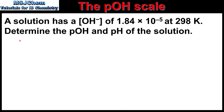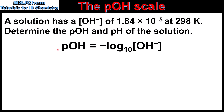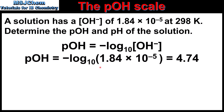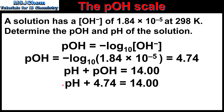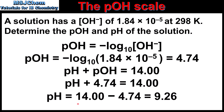In the next example, we're told that a solution has a hydroxide ion concentration of 1.84 × 10⁻⁵ mol dm⁻³ at 298 K, and we'll determine the POH and the pH of the solution. First we use: POH equals the negative log of the hydroxide ion concentration. That's the negative log of 1.84 × 10⁻⁵, which gives us 4.74. Next, using pH plus POH equals 14: pH plus 4.74 equals 14, so pH equals 14 minus 4.74, which gives us 9.26. We could also solve this using Kw to find the hydrogen ion concentration and then taking the negative log of that.